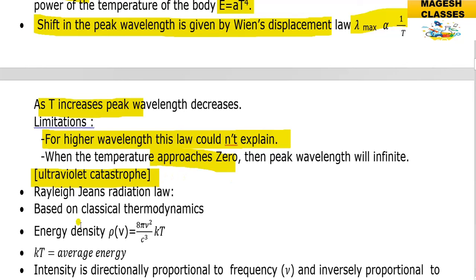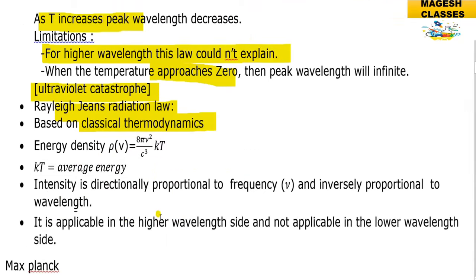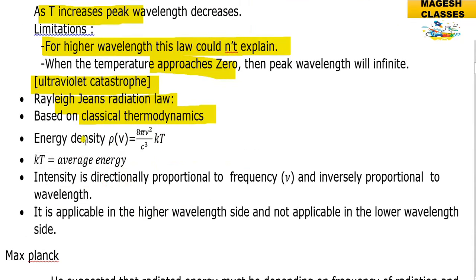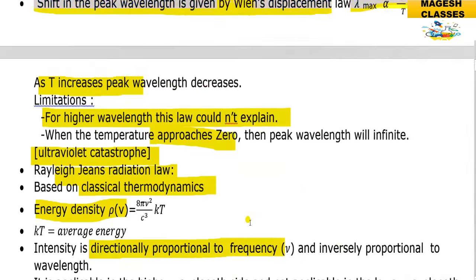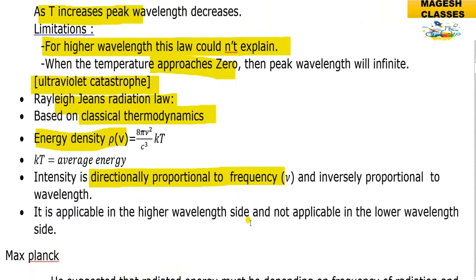The Rayleigh-Jeans radiation law is based on classical thermodynamics. The energy density is equal to 8πν²/c · kT, where ν is the frequency and kT is the average energy. The intensity — energy density — is directly proportional to frequency and inversely proportional to wavelength. The Rayleigh-Jeans law is applicable only on the higher wavelength side, not the lower wavelength side.